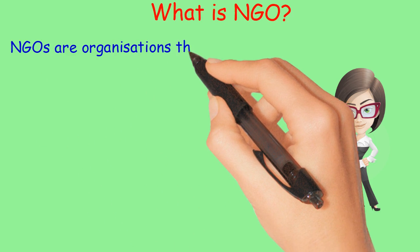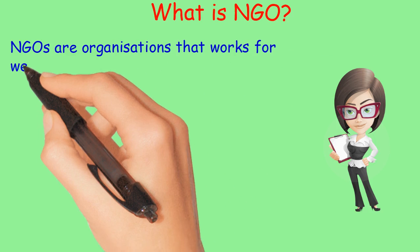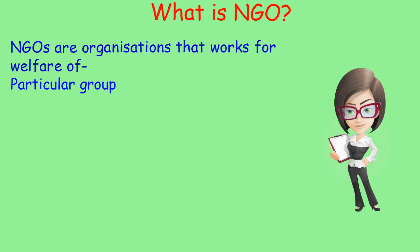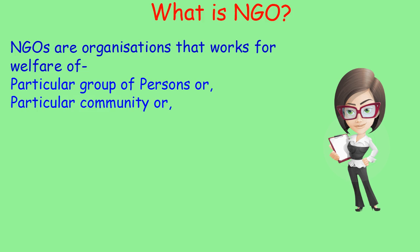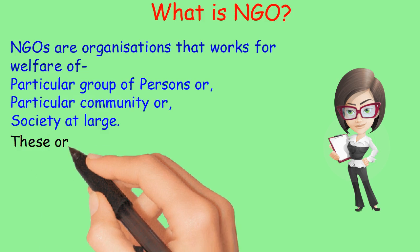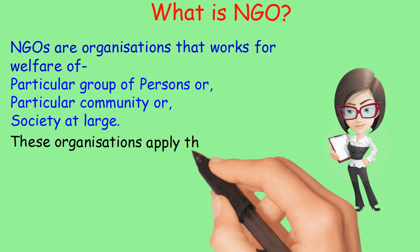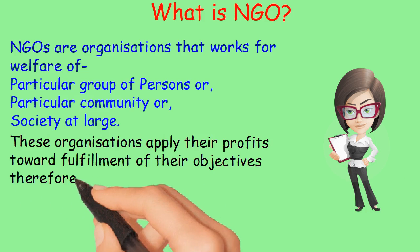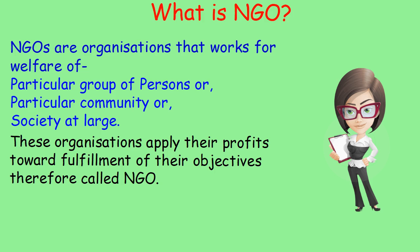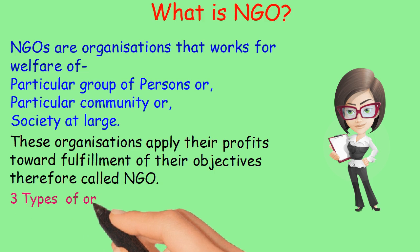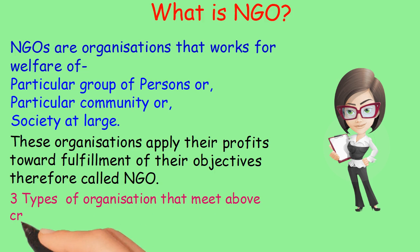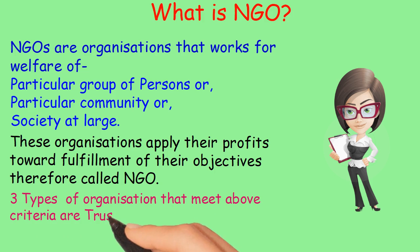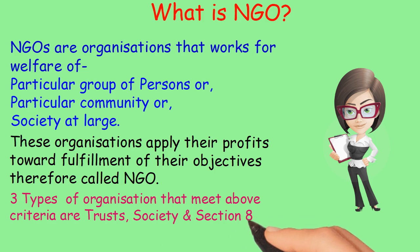What is NGO? NGOs are organizations that work for the welfare of a particular group of persons, a particular community, or society at large. These organizations apply their profits toward fulfillment of their objectives, and therefore are called NGOs. Three types of organizations that meet the above criteria are Trusts, Society, and Section 8 Company.